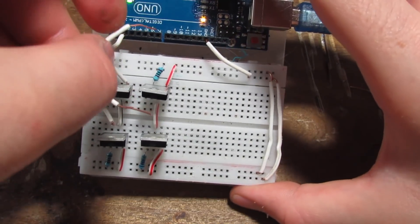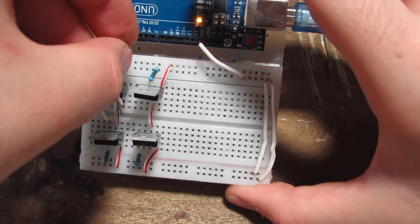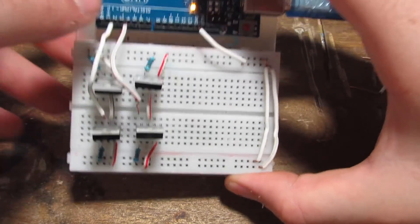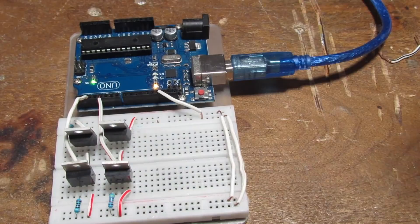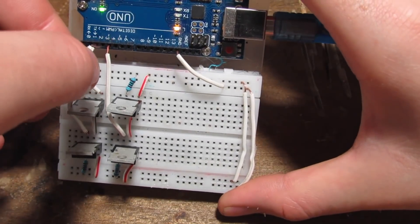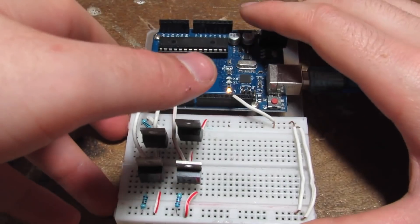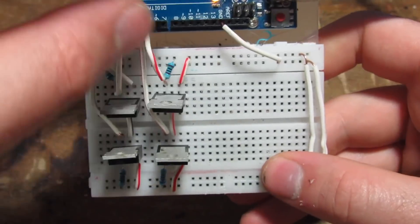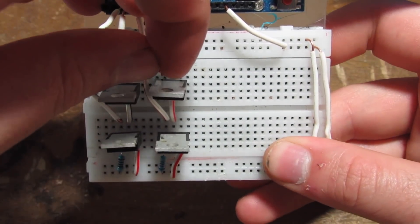So for the N channel MOSFETs I'm going to use even numbers. So pin 2 is going to the first N channel MOSFET. Second N channel is going to go to pin 4. First P channel is going to go to pin 3, and the second P channel is going to go to pin 5.